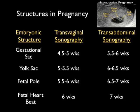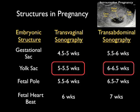Here's a table showing the structures in pregnancy and about the time they're seen on transvaginal versus transabdominal sonography. The first structure is the gestational sac, seen on transvaginal sonography at about 4.5 to 5 weeks, and about a week later on transabdominal. The yolk sac is seen at about 5 to 5.5 weeks transvaginally, and a week later transabdominally. The fetal pole is seen at about 5.5 to 6 weeks transvaginally, and fetal heartbeat is seen at about 6 weeks transvaginally and 7 weeks transabdominally.